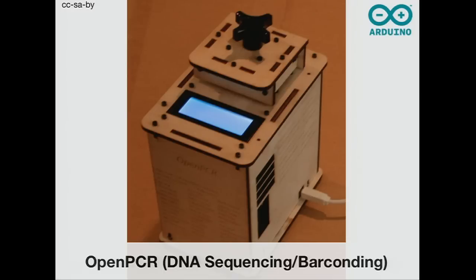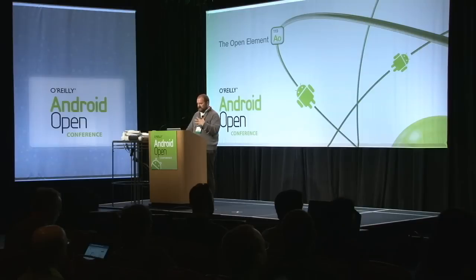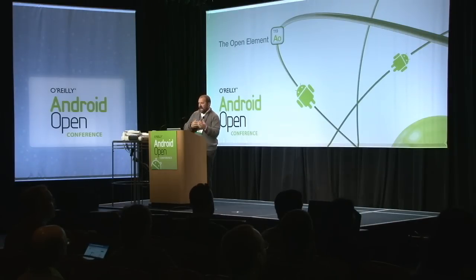There's also this project called OpenPCR, which I think is really fascinating. It's part of a set of tools you can use to analyze DNA. This particular machine is open source hardware and software — you put DNA samples in and they amplify them so you can further analyze them. What's interesting is that this costs $500. You can buy a kit for $500 and make it yourself, or hack and build upon it.